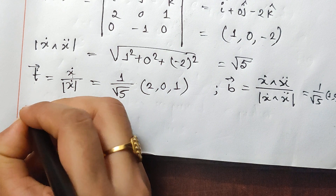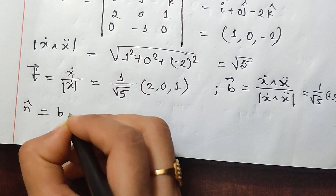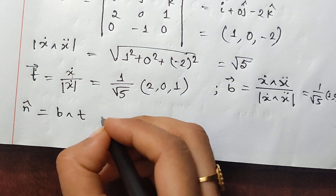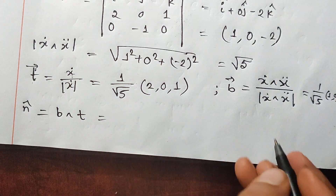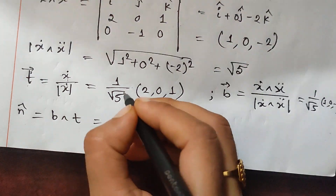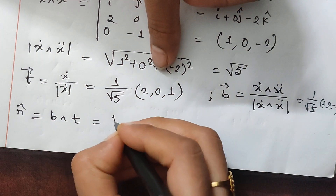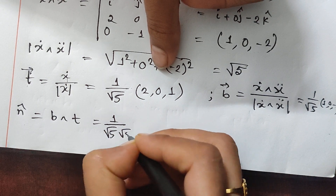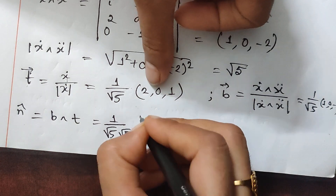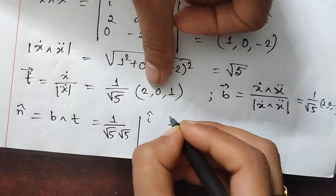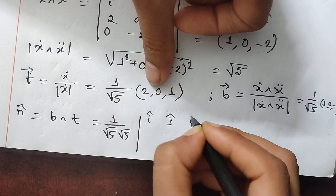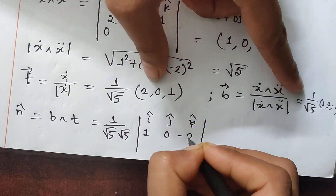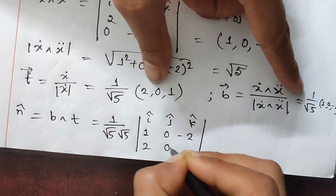Now, N vector equals B cross T. So B and T — I am going to write — B cross T, I am going to write (1/√5)(1/√5). I am going to write: 1, 0, −2, then 2, 0, 1.